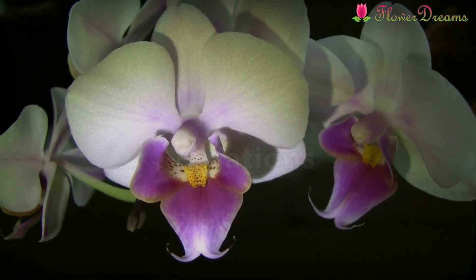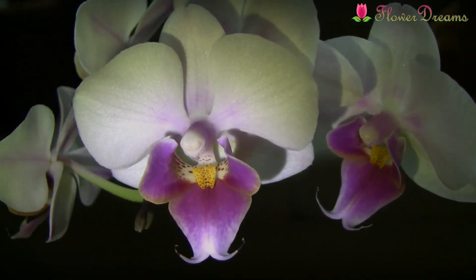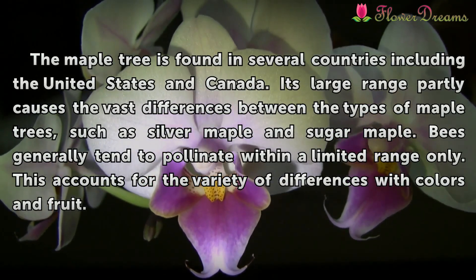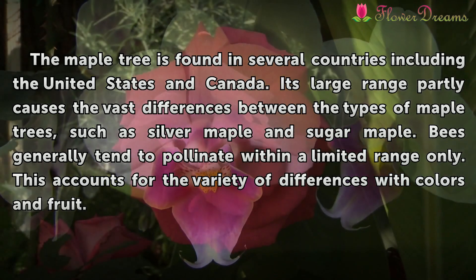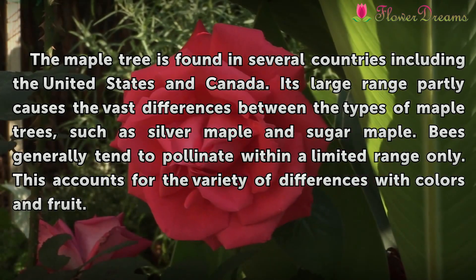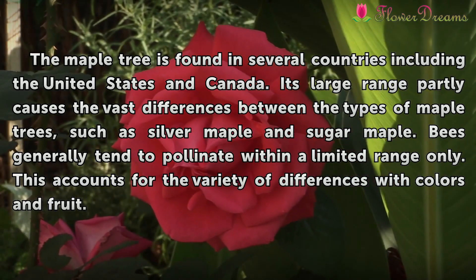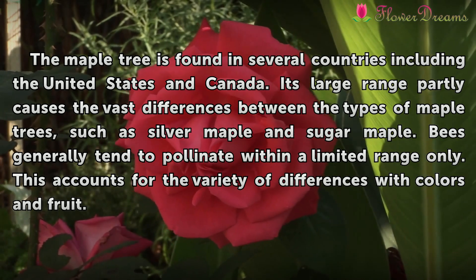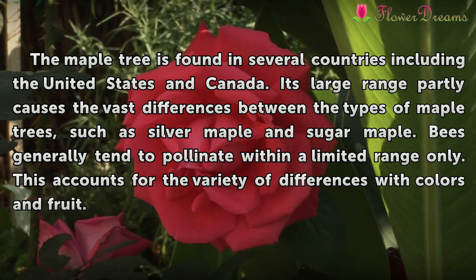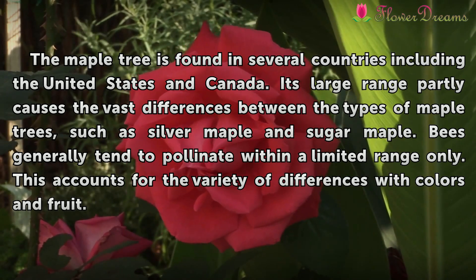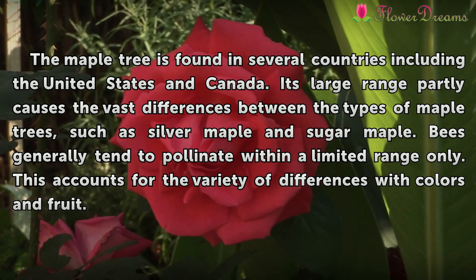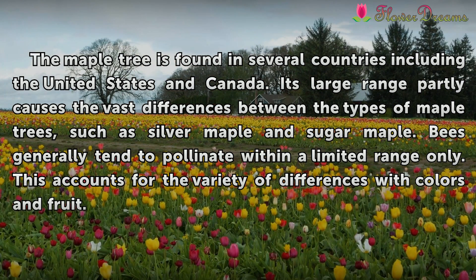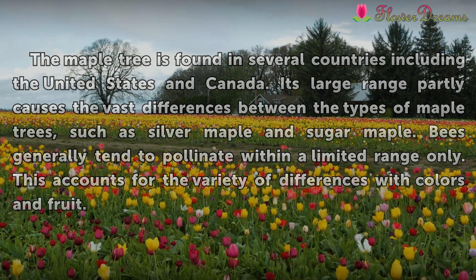Variations. The maple tree is found in several countries including the United States and Canada. Its large range partly causes the vast differences between the types of maple trees, such as silver maple and sugar maple. These generally tend to pollinate within a limited range only, which accounts for the variety of differences with colors and fruit.